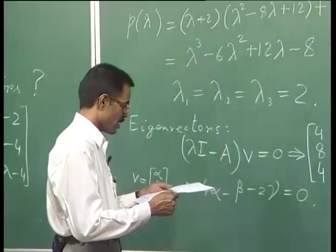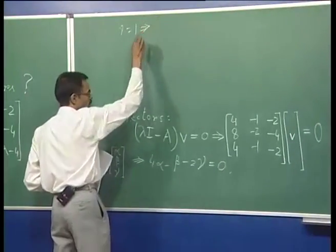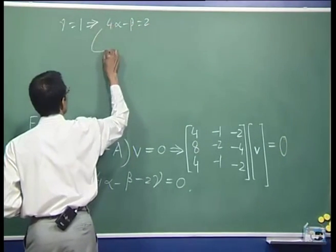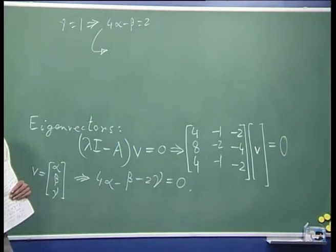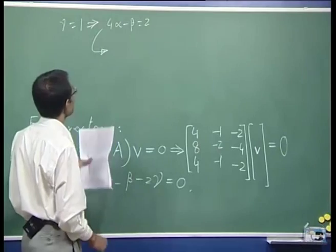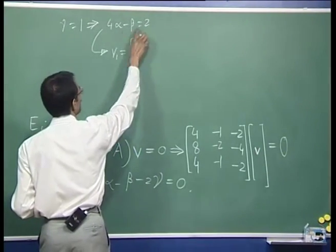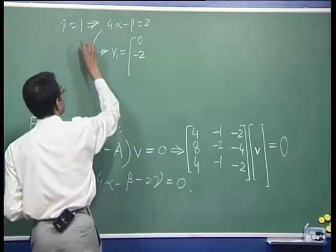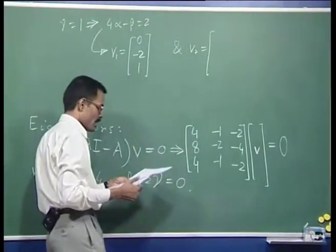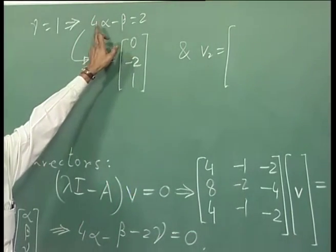Suppose we set gamma equal to 1. Then we get 4 alpha minus beta equal to 2, and we can still choose alpha to get beta. For example, suppose we choose alpha to be 0 — then alpha is 0, beta turns out to be minus 2, and gamma is 1. In another case, suppose we choose alpha to be 1 — then we get beta as 2.